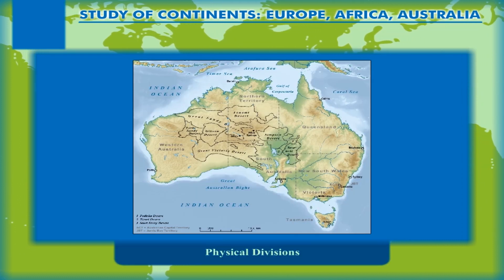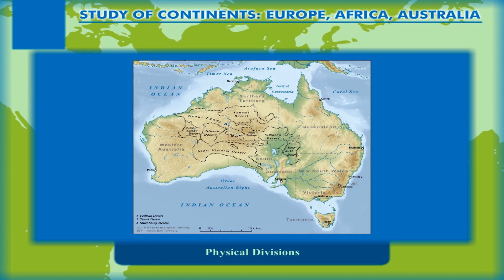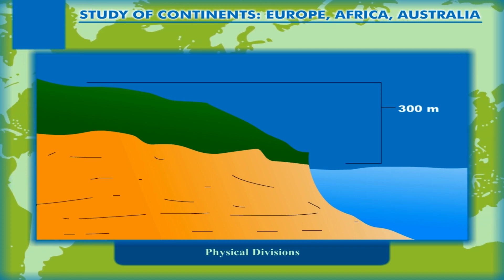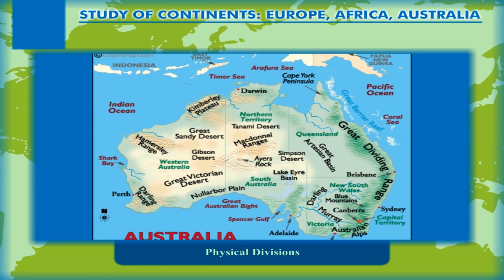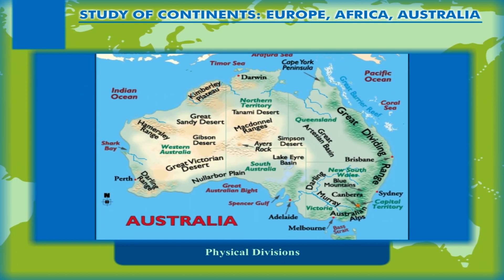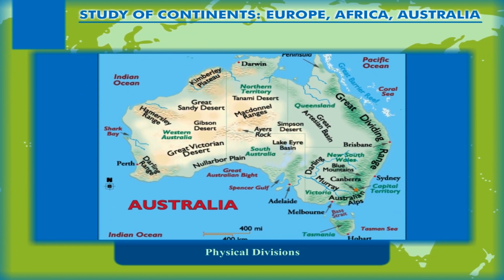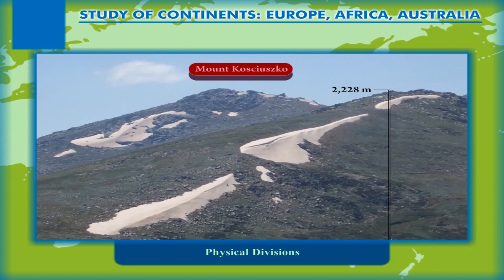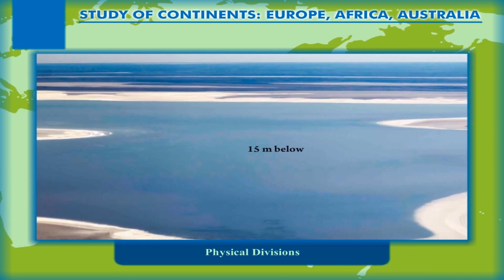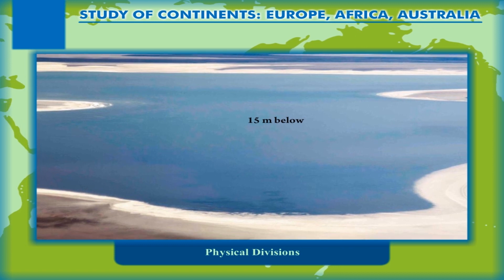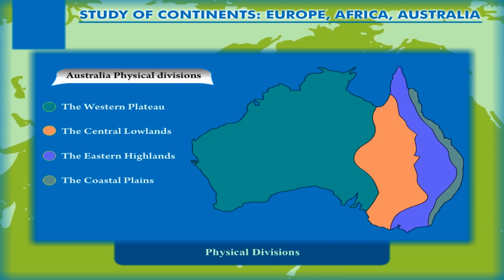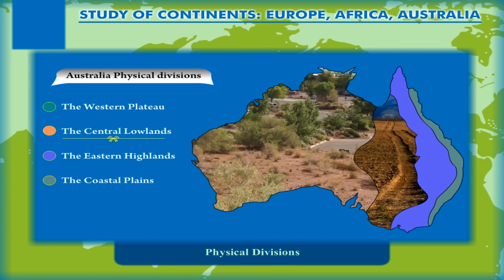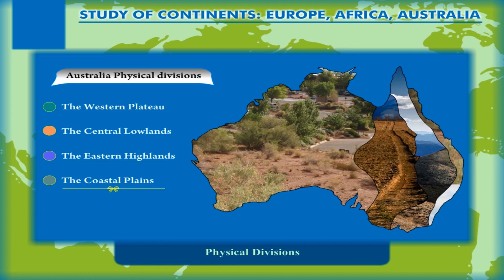Australia is mostly a flat continent with a mean elevation of only about 300 metres above sea level. It has only about 5% of its area 600 metres above sea level, with its highest point Mount Kosciuszko at 2,228 metres and lowest point Lake Eyre at approximately 15 metres below sea level. Australia can be divided into four major physical divisions: the Western Plateau, the Central Lowlands, the Eastern Highlands, and the Coastal Plains.